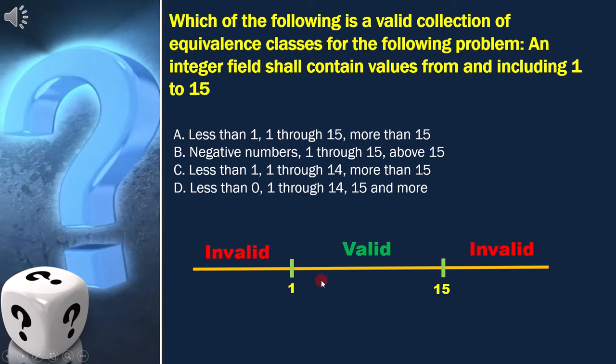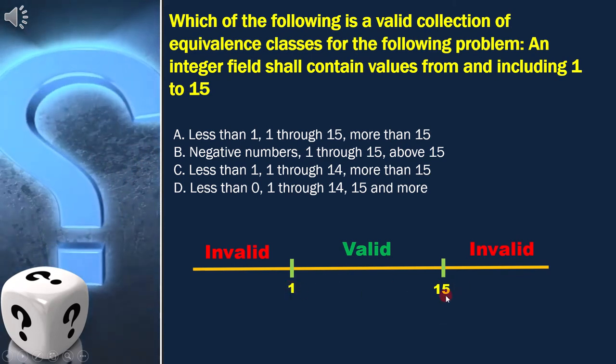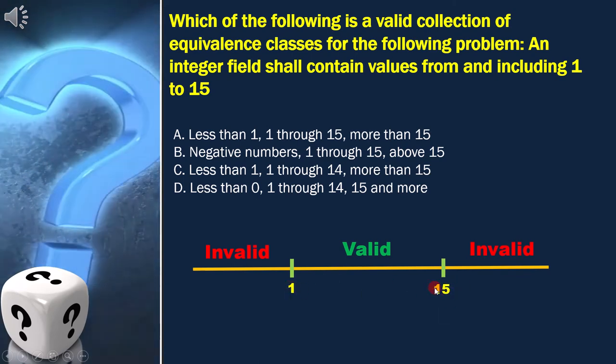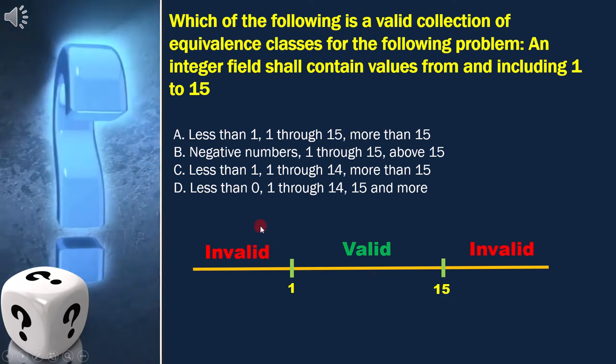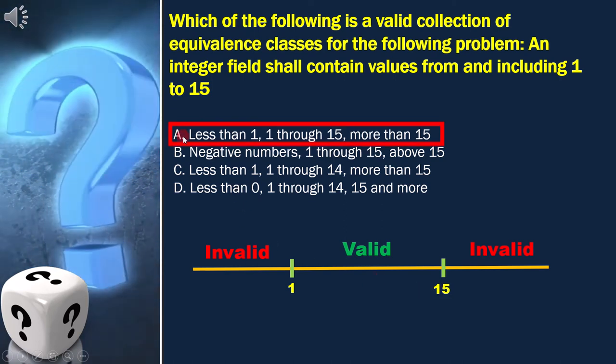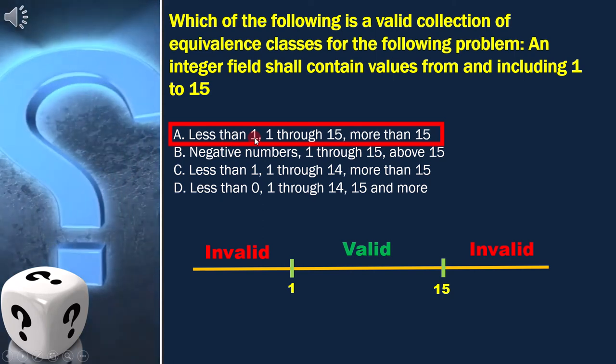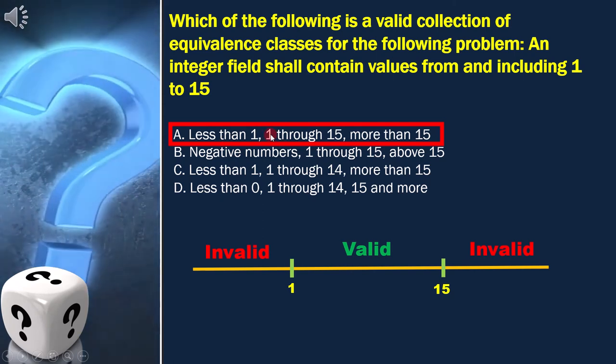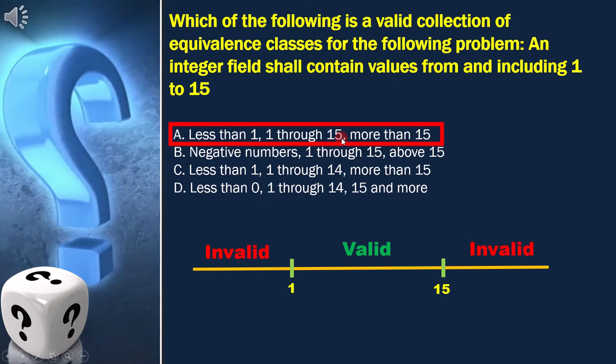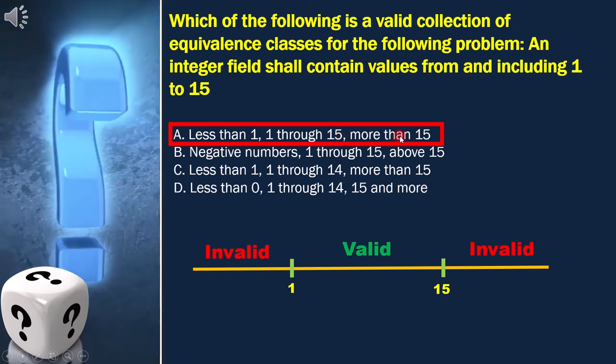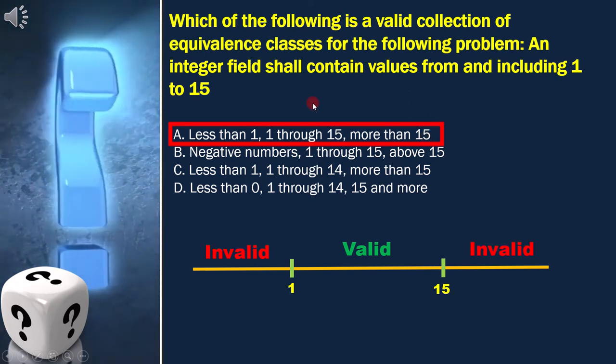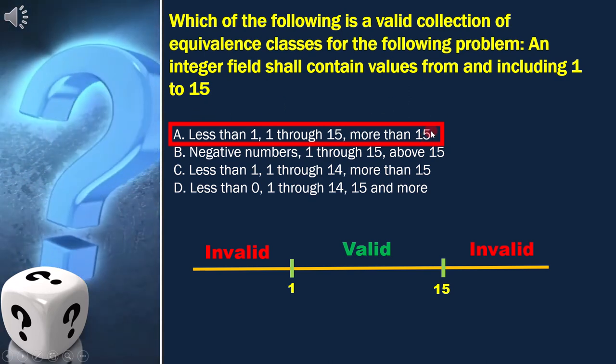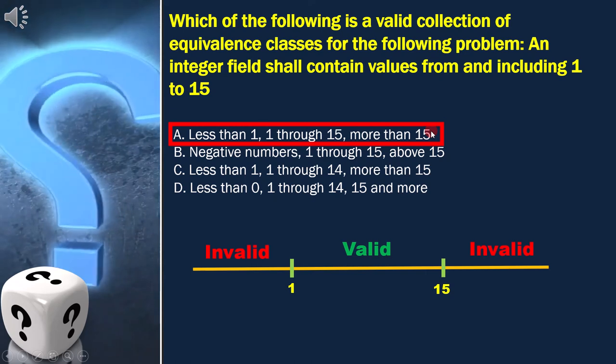Therefore, 1 and 15 will be lower and upper boundary. As per the diagram, we can say first equivalence class is less than 1, second equivalence class is 1 through 15, and third equivalence class is more than 15. That means option A is the answer. As per the voucher! Thank you.